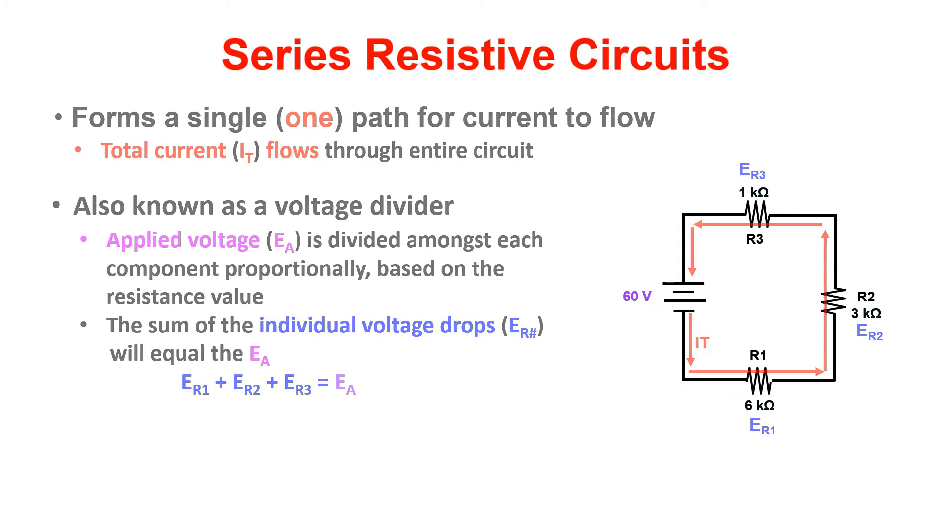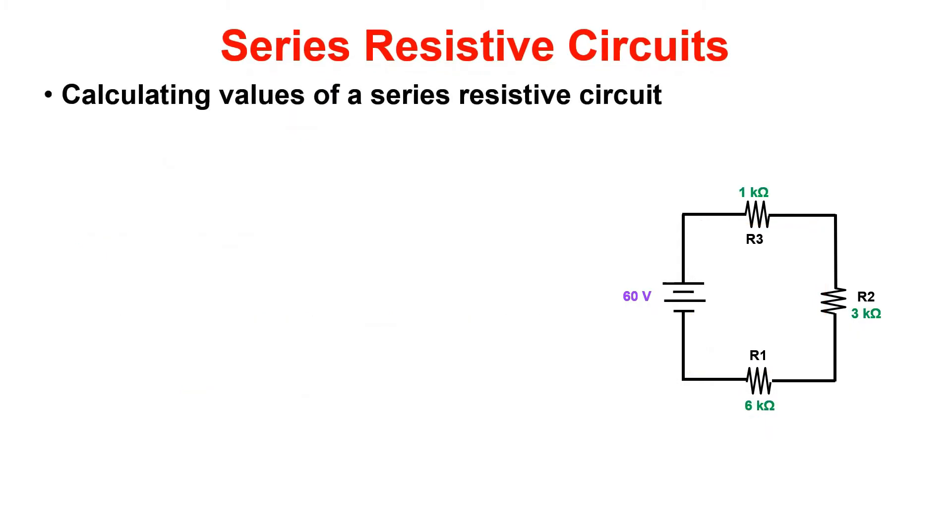In a series circuit we are concerned with three values when it comes to performing calculations: applied voltage or EA, total resistance or RT, and total current or IT.